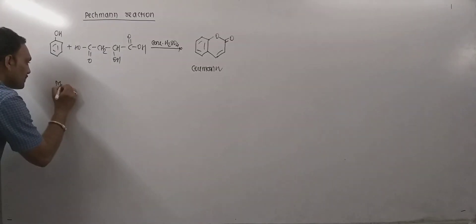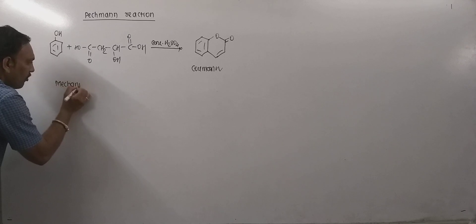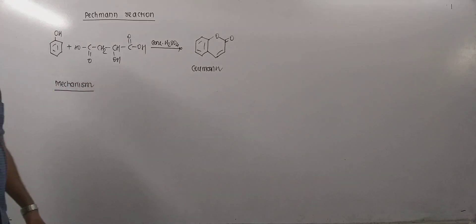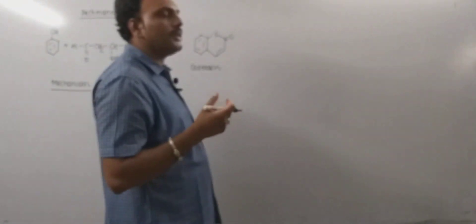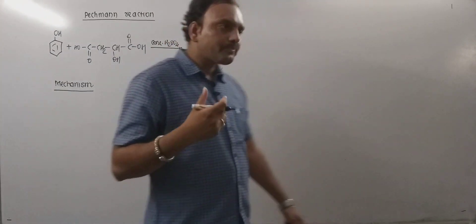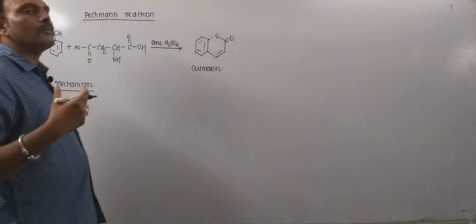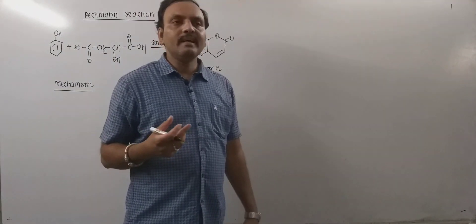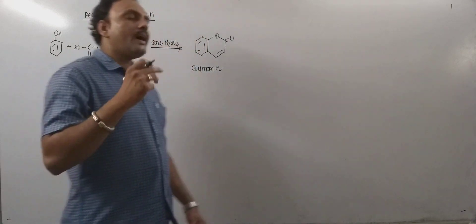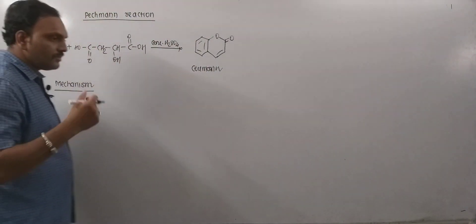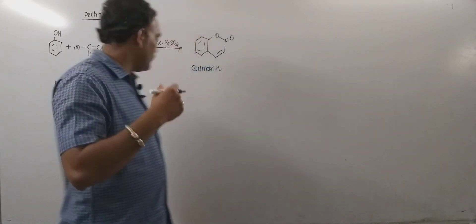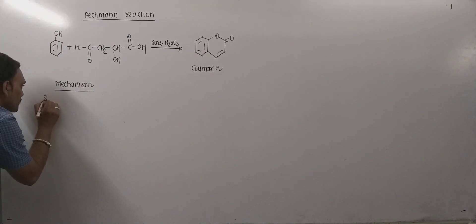Now as far as mechanism of this reaction is concerned, mechanism is simple. It is believed that in very first step malic acid undergoes decomposition forming formic acid and malonaldehyde acid.